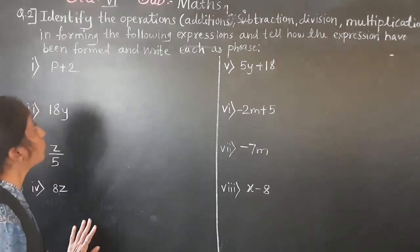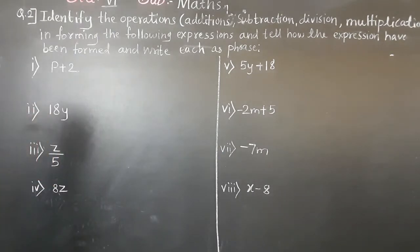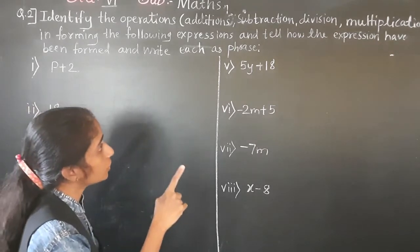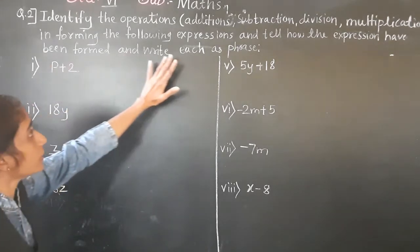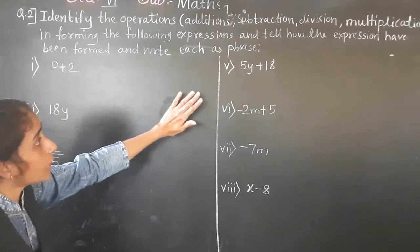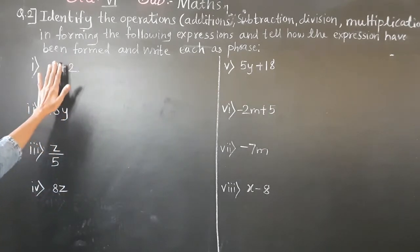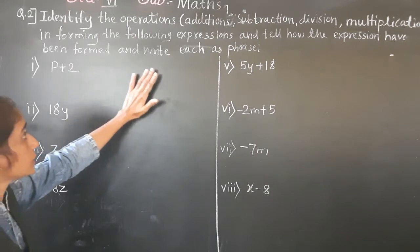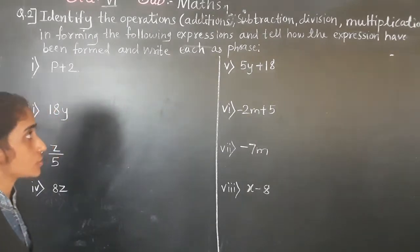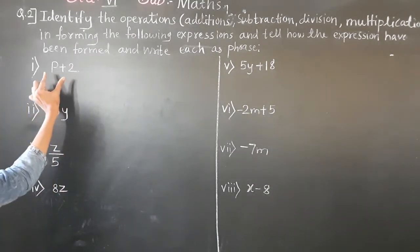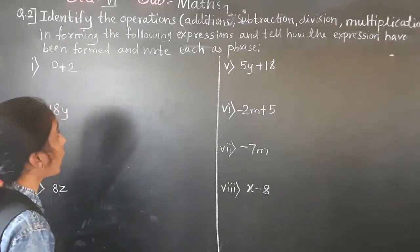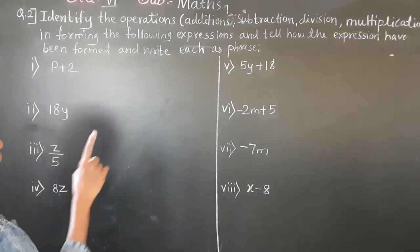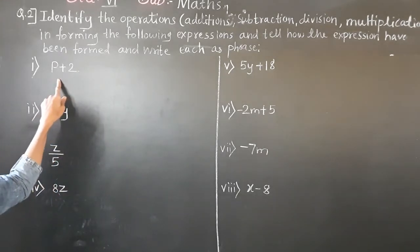Let's solve question number 2: Identify the operations — addition, subtraction, division, multiplication — in forming the following expressions, tell how the expressions have been formed, and write each as a phrase. First, let's identify the operation.